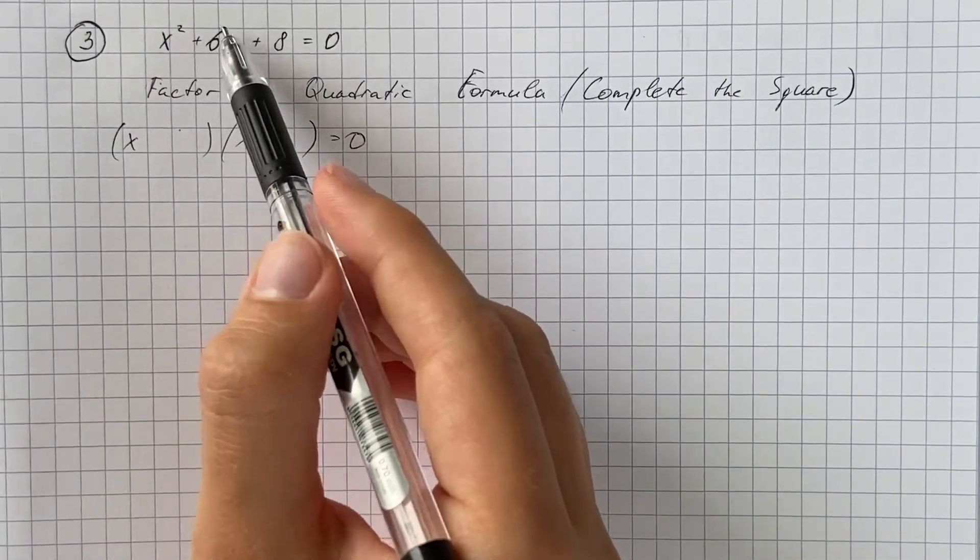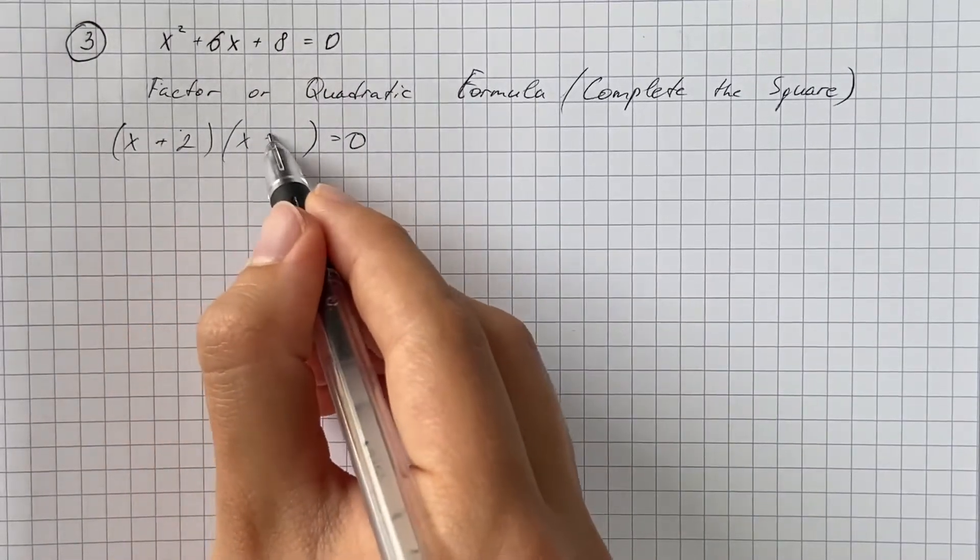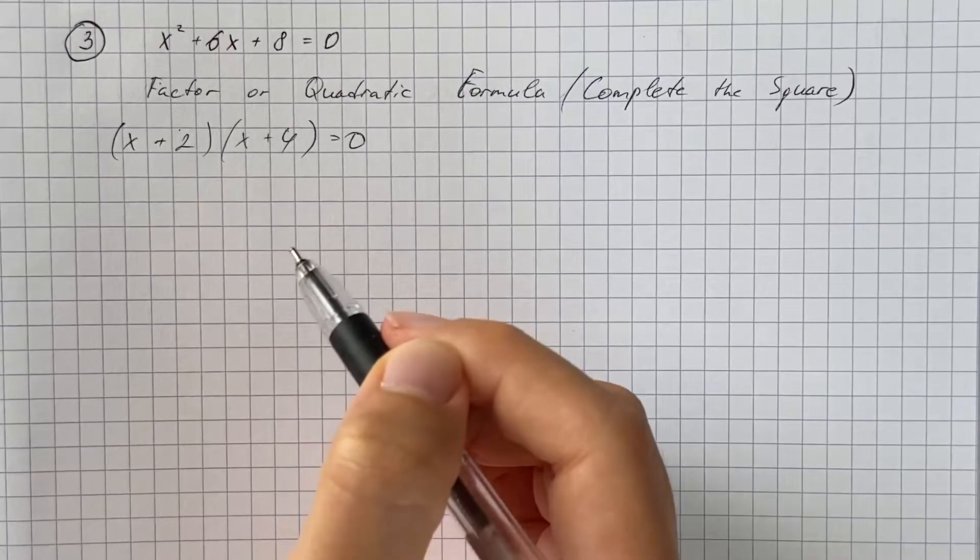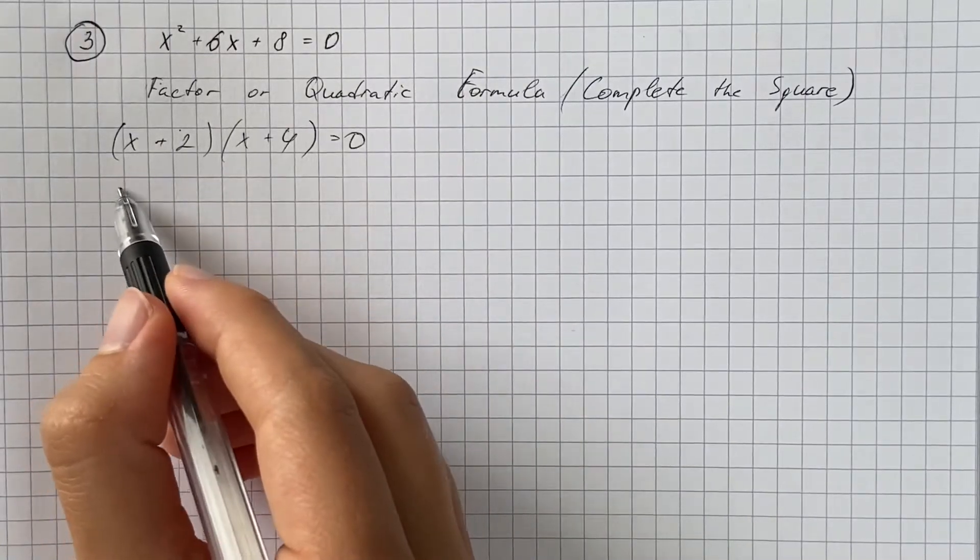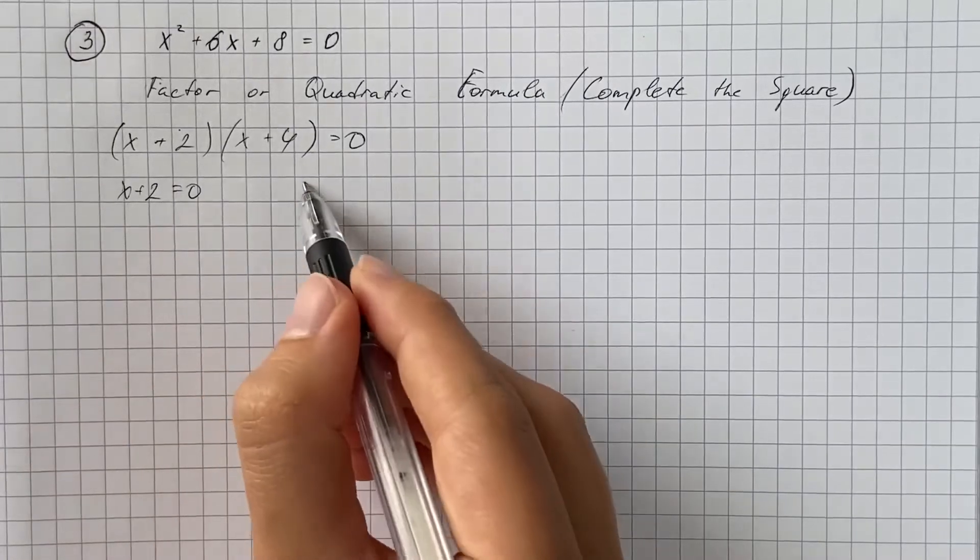That's going to be positive two and positive four. Now we're going to set each factor equal to zero and solve.